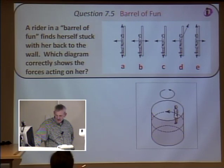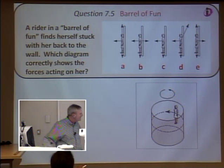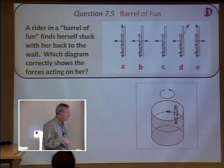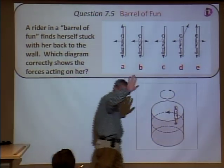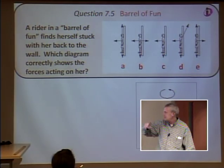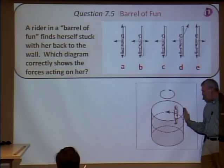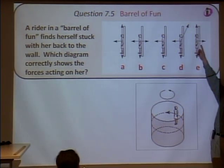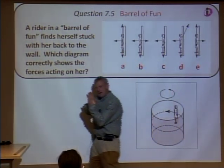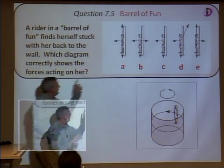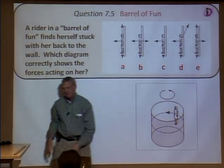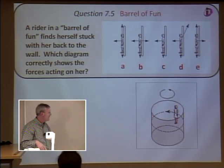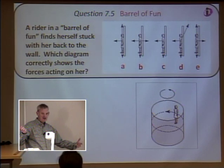The answer is a. Remember, these are the net forces acting on her. There's a frictional force keeping her pinned to the wall, preventing her from sliding down. As she's spinning, her body wants to go straight — she's smashing into the wall. Her force pushing on the wall and the wall's normal force pushing her back toward the center, plus friction upward and mg downward.